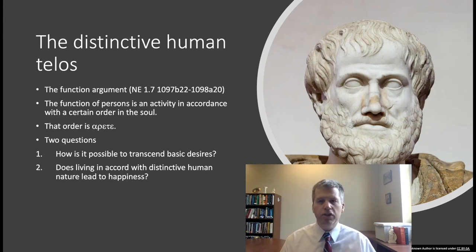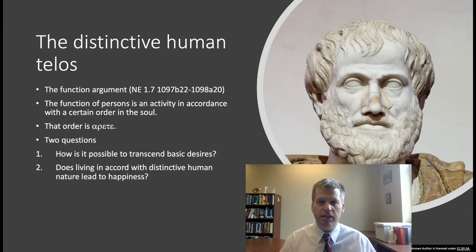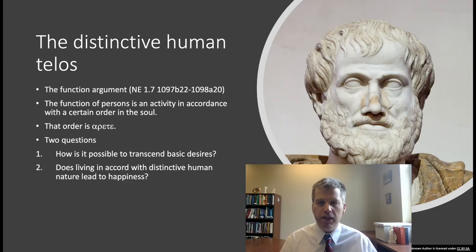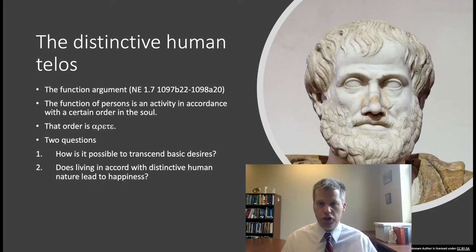This is a point where Aristotle differs from Sartre, the French philosopher known for the idea that existence precedes essence — that individual subjectivity is prior to essence and can determine the conditions of one's flourishing. Aristotle, by contrast, holds that essence precedes existence: who you are as a human is that you're a member of the human species, which has a particular good — a life lived in accord with a certain order in the soul.